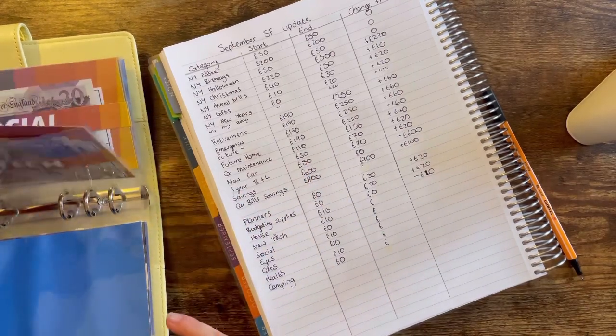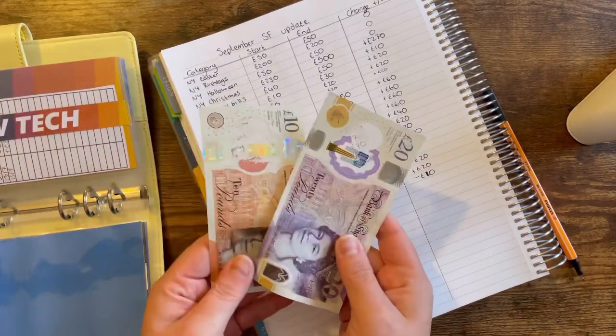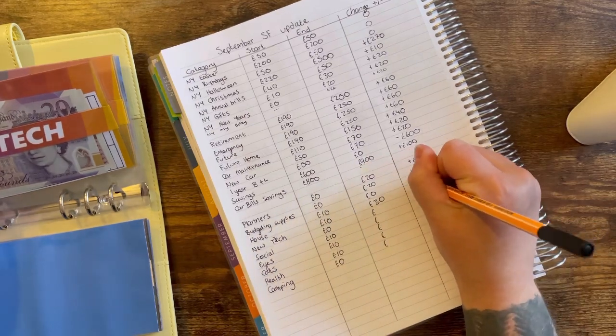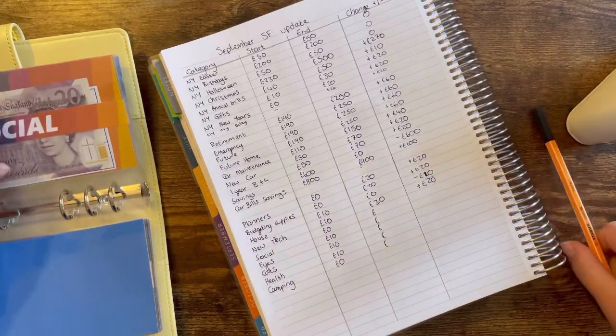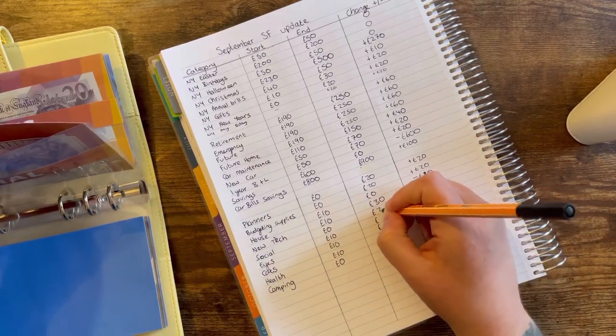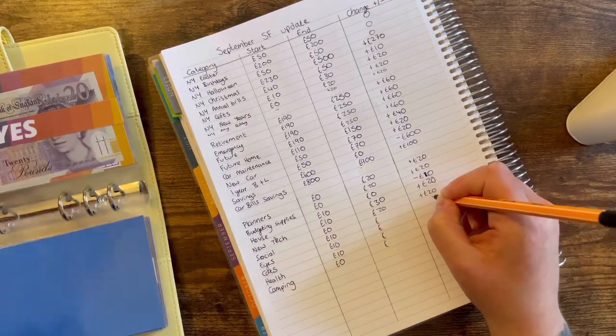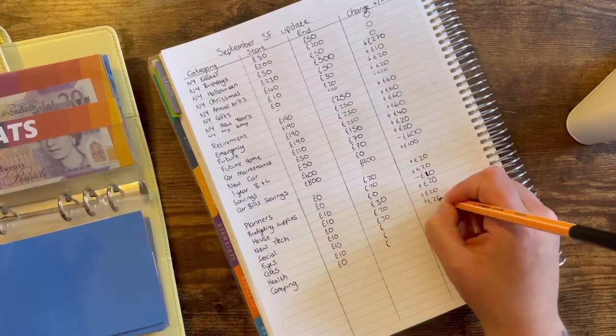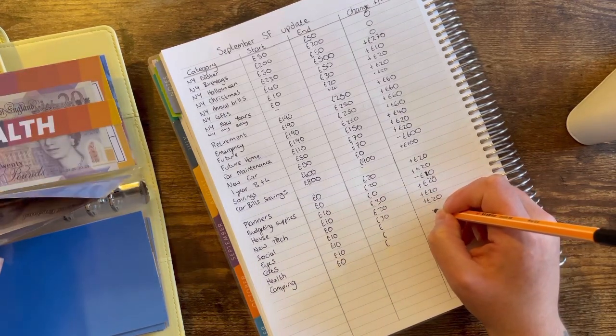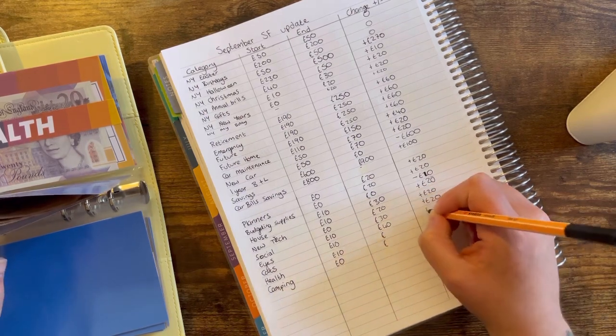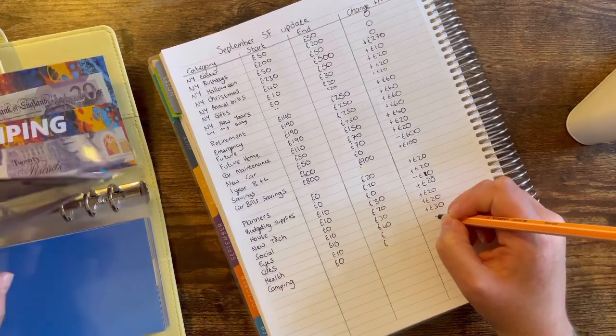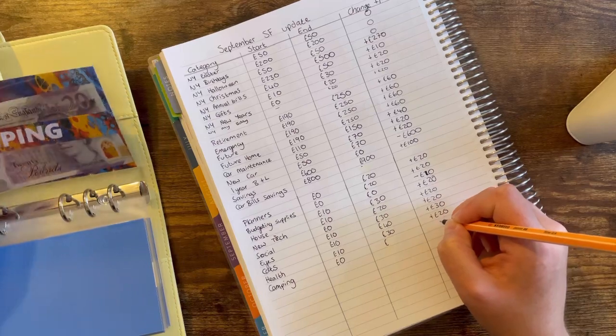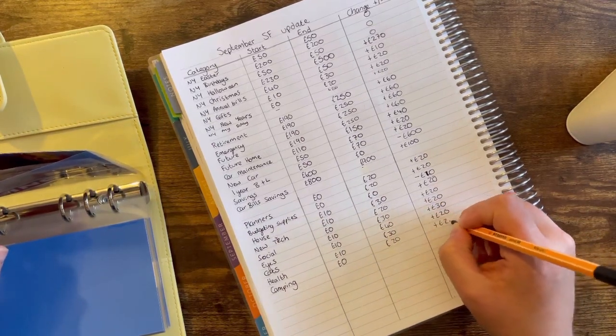New tech has 30 pounds, so that is a positive change of 20. Social has 20, which is a positive change of 20. Eyes has 30, which is a positive change of 20. Cats has 40, which is a positive change of 30. Health has 30, which is a positive change of 20. And then camping has 20, which is a positive change of 20.